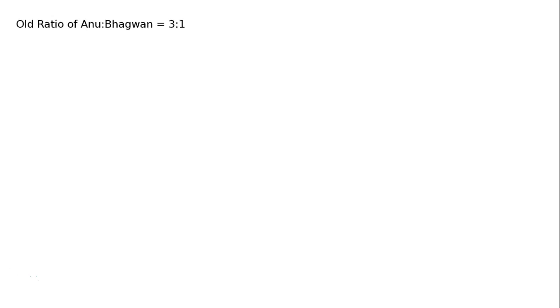Question 29: Anu and Bhagwan were partners in a firm sharing profits in the ratio of 3 to 1. Record necessary journal entries in the books of the firm for the following transactions. Old ratio of Anu to Bhagwan is 3:1. New ratio of Anu to Bhagwan to Raja, as given in the book, is 2:2:1.